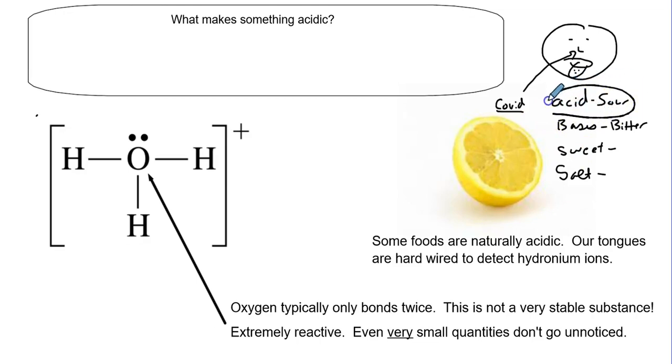Back to the idea, what makes something acidic, what is my tongue actually sensing, and that is, we call the hydronium ion, the H3O plus ion is called the hydronium ion.